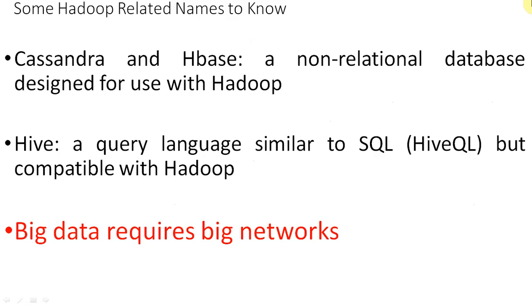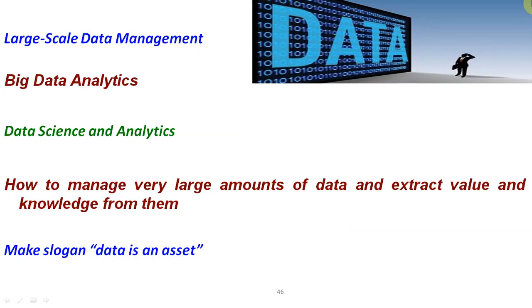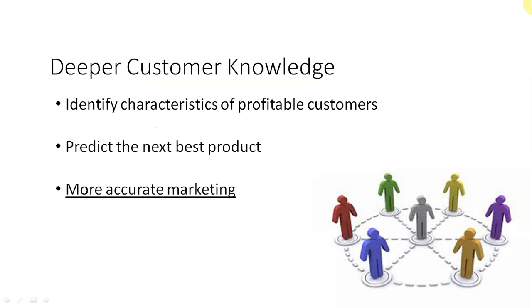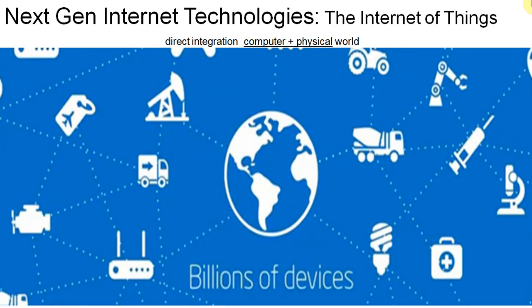Languages like Cassandra and Hive are essential right now. Big data requires big networks. We have to be expert in this technology. Large-scale data management is required. We can start our innovation on big data analytics and data science. Data is an asset — we can extract customer movement, likes, and dislikes for accurate marketing. IoT is an emerging area, and it is the next-generation internet technology automating all our devices.